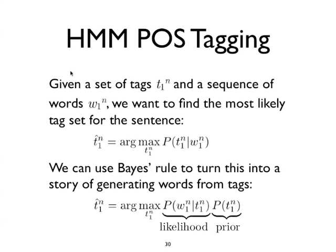In Markov model part of speech tagging, we start with some fundamental definitions. Given a set of tags T1 through N and a sequence of words W1 through N, we want to find the most likely tag set for the sentence T-hat one through N, which we find by taking the argmax of the probability of T1 through N given W1 through N. However, because this formula as-is is difficult to measure in a corpus, we use Bayes' rule to turn this into a story of generating words from tags. We rewrite this so that T-hat one through N is the argmax of the probability of the words given the tags multiplied by the probability of the tags. We call the probability of the words given the tags the likelihood, and the probability of the tags the prior.